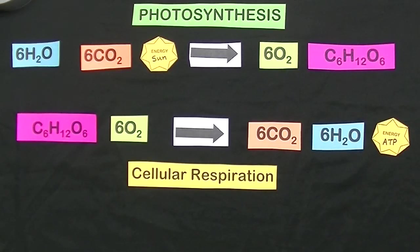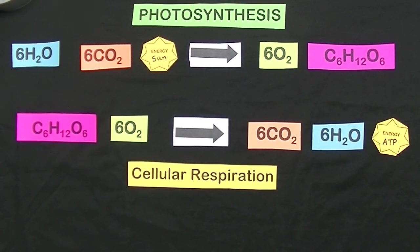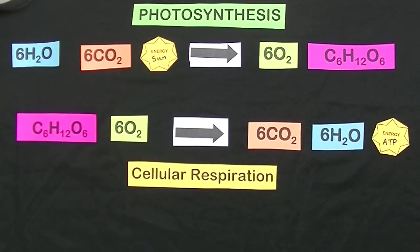What do you notice about these two reactions? One is just the reverse of the other. The reactants for photosynthesis are the products of respiration, and the reactants of respiration are the products of photosynthesis. So it's just a cycle.